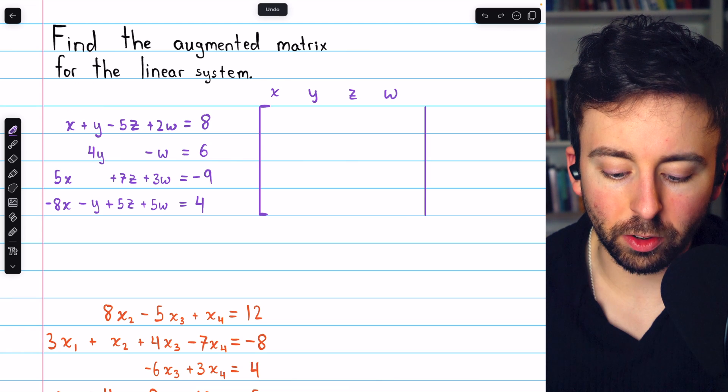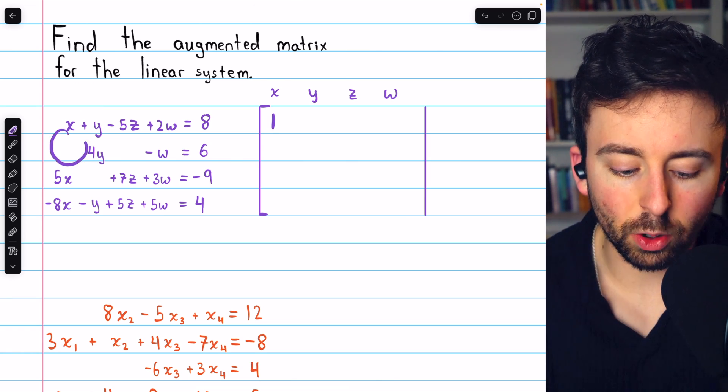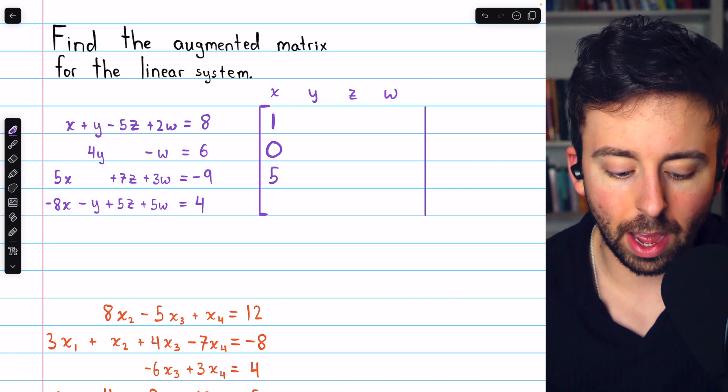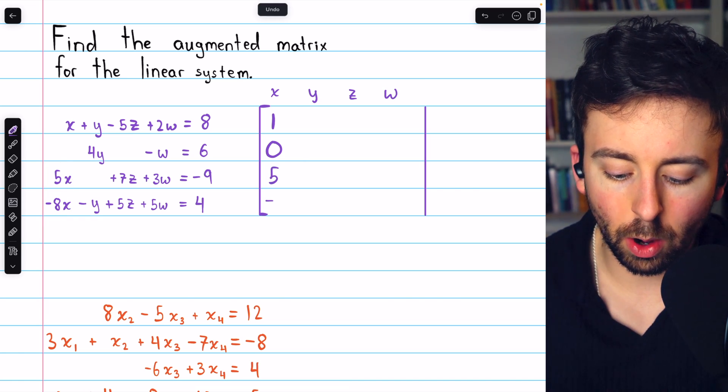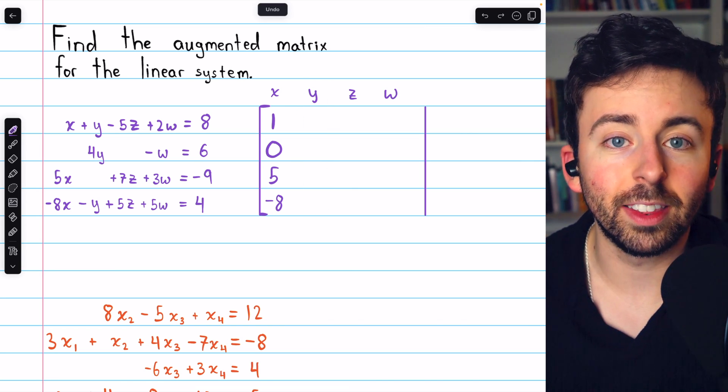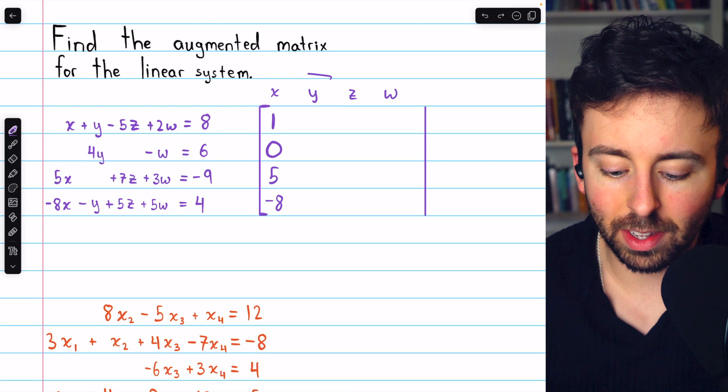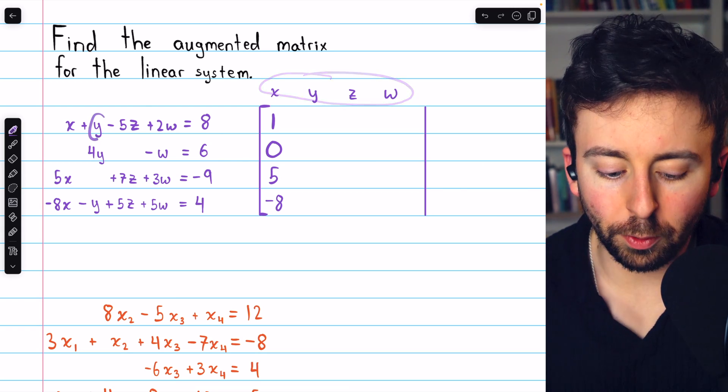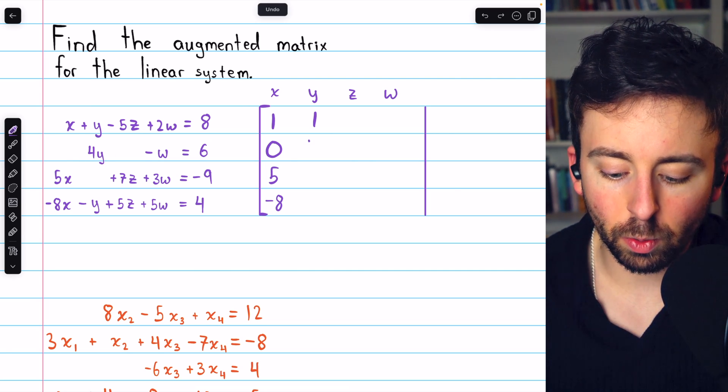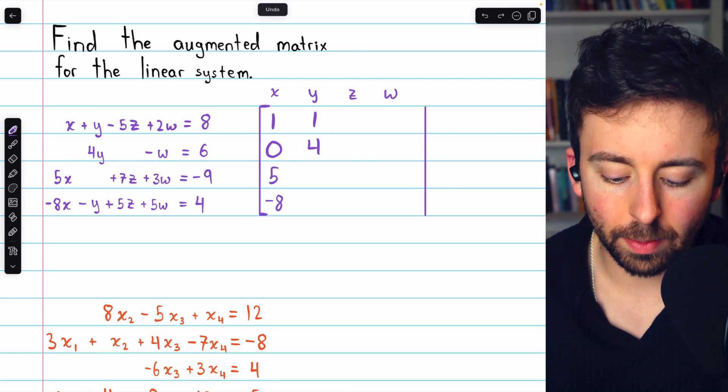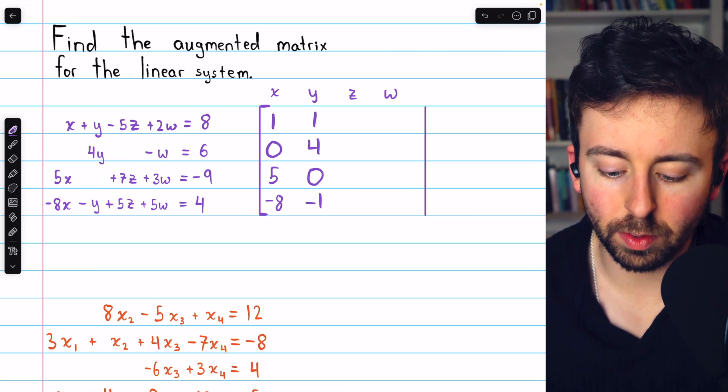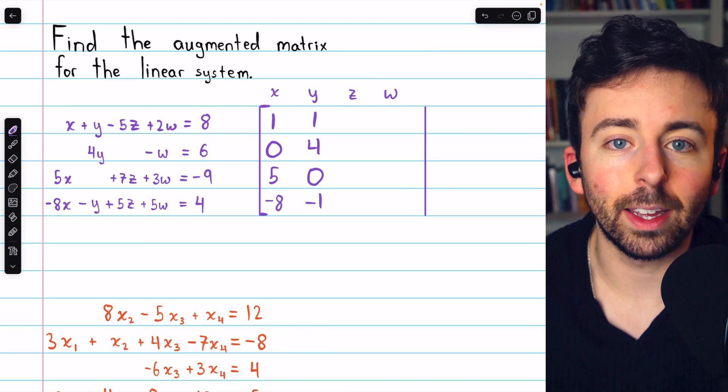The coefficient of x from the first equation is one. From the second equation, there is no x, so that's zero. From the third equation, the coefficient is five. And from the fourth equation, the coefficient is negative eight. Then, we move on to the coefficients for y in the second column. Note that this isn't part of the matrix, these are just labels. In the first equation, y has a coefficient of one. In the second equation, y has a coefficient of four. There's no y in the third equation. And in the fourth equation, y has a coefficient of negative one.